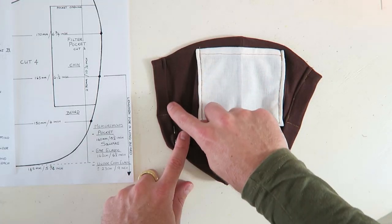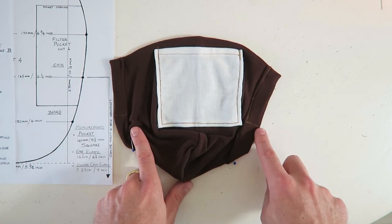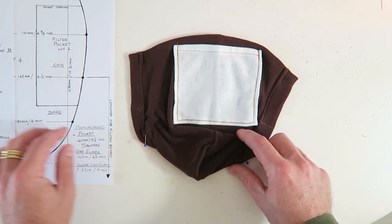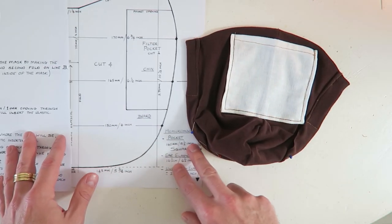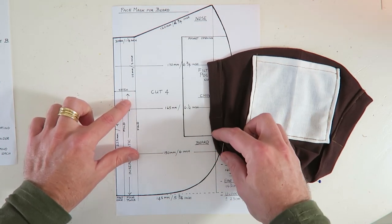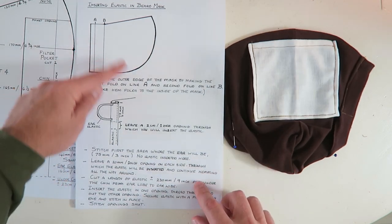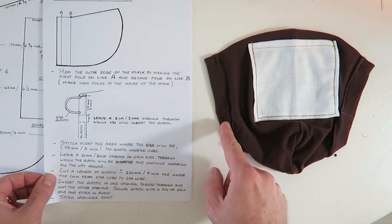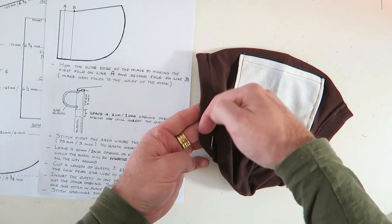Now you can see that we've stitched three inches down and across. That's the area now where the elastic for your ears will be attached. So now we're going to stitch all the way around but we're going to leave a one inch space. This will be the insert area for your elastic. Now if you look on the blog you see that there are additional instructions on how we're going to do that. But basically you're leaving a two centimeter or one inch space and that's going to be where you insert your elastic.